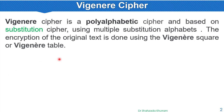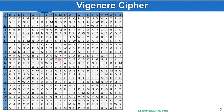This encryption is basically done using the Vigenère table. How do we build the table? We will use 26 alphabets, starting A to Z horizontally and A to Z vertically.